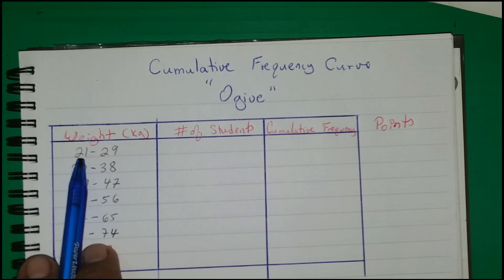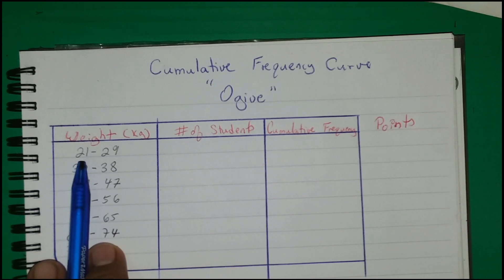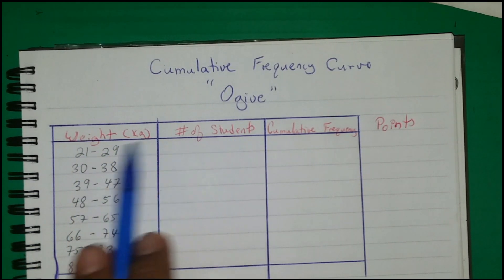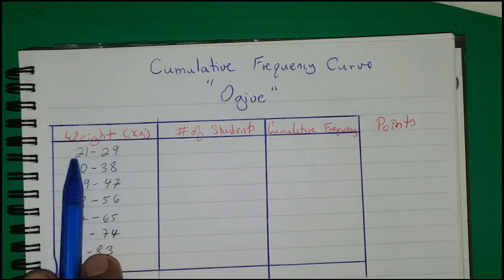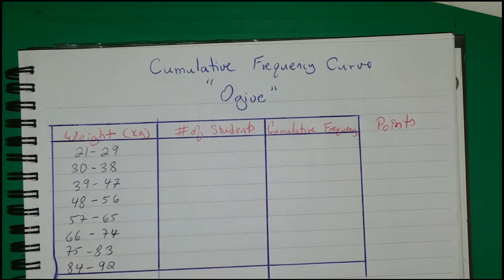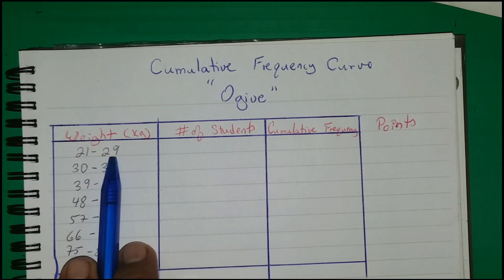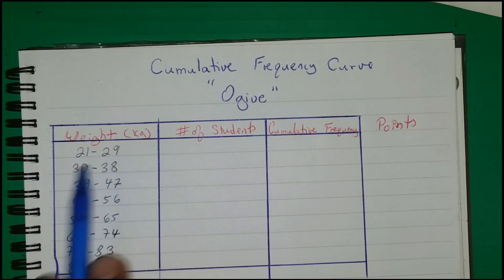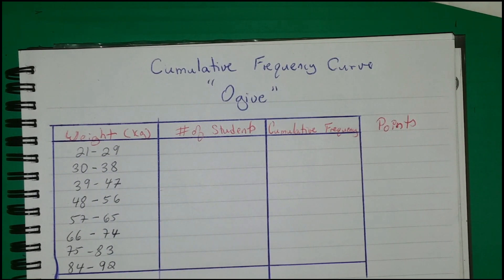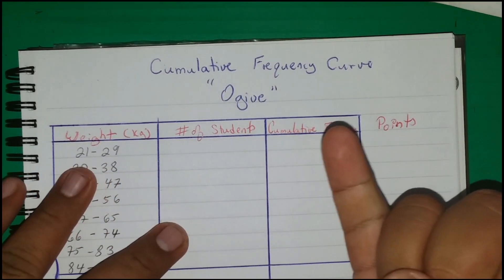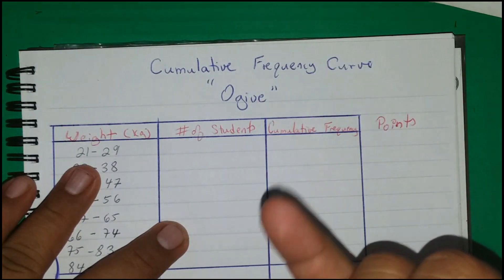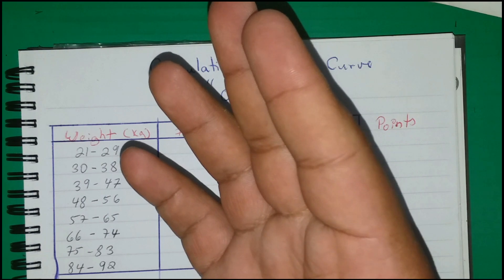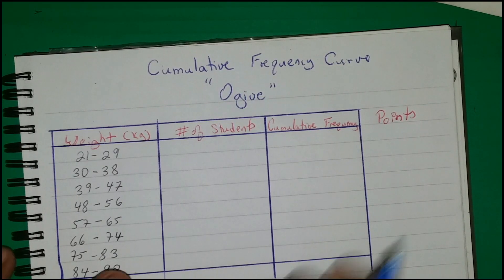Students were asked their weight in kilograms. Because of the large number of students, we could not record individual weights like 51 or 52, so we decided to use a grouped frequency table. In this case we have groups, and we gathered the number of students that fall within each group — for example, 21 to 29 kilograms is a group of nine values.